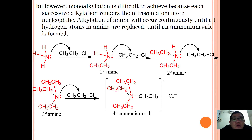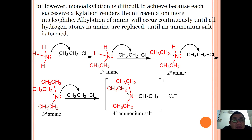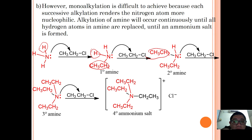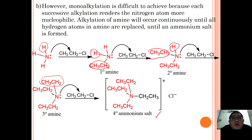Alkylation of the amine will occur continuously until all hydrogen atoms in the amine are replaced with the alkyl group. This is why we call it over-alkylation. Step by step: first, hydrogen is substituted with the alkyl group; then further substitution occurs with another alkyl group; and again, until you form what we call a quaternary ammonium salt.